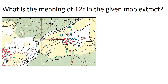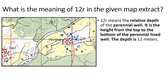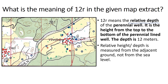Once again, we can see blue color '12R'. What is the meaning of '12R'? By now you must be very expert in writing the answer. '12R' means the relative depth of the perennial lined well. It is the depth from the top to the bottom of the perennial lined well — the depth is 12 meters. Relative height or depth is measured from the adjacent ground, not from the sea level. Happy learning!